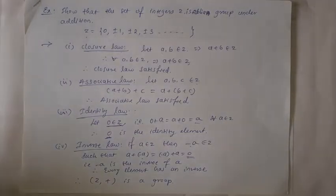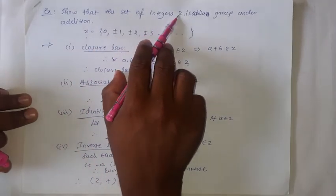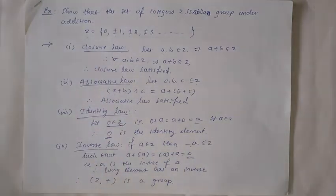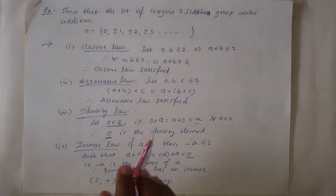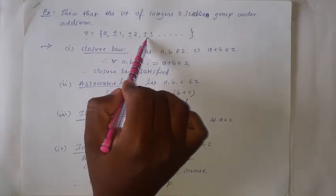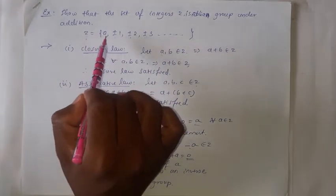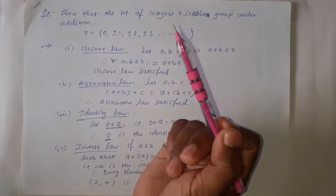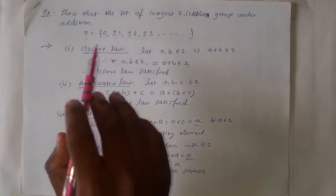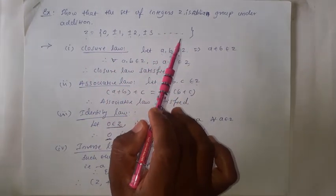The first example: show that the set of integers Z is an Abelian group under addition. The set of integers can be written as Z = {0, ±1, ±2, ±3, ...}, meaning the set of integers contains zero, positive natural numbers, and negative numbers. Now to show that Z is an Abelian group, we first need to prove that Z is a group. If it is a group and also satisfies the commutative property, then we can say that Z is an Abelian group.